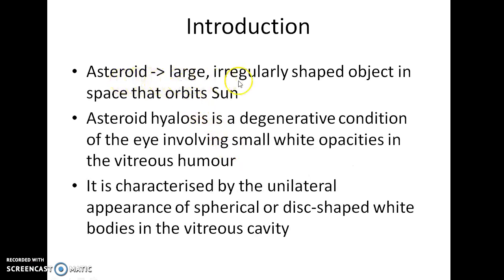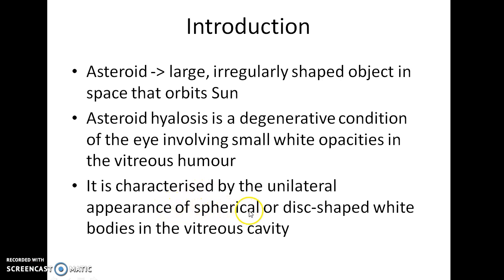Asteroids are large, irregularly shaped objects in space that orbit the sun. Asteroid Hyalosis is a degenerative condition of the eye involving small white opacities in the vitreous humor. It is characterized by unilateral appearance of spherical or disc-shaped white bodies in the vitreous cavity that resemble asteroids.